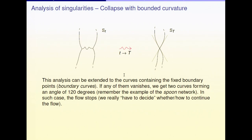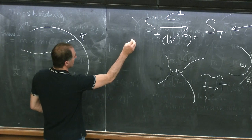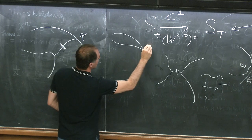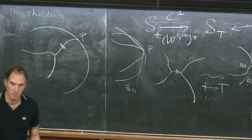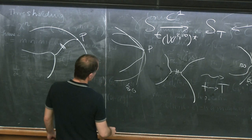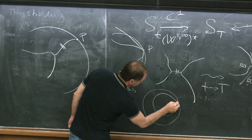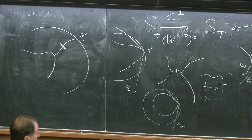A remark: this analysis extends also to the case of a boundary curve arriving at an endpoint of your network. If this curve is collapsing, instead of an inner curve, what you get in the limit is two curves arriving at the point P forming between them an angle of 120 degrees. This is exactly what we saw in the spoon example, where the curve connecting the spoon to the boundary collapses and you end up with two angles of 120 degrees.